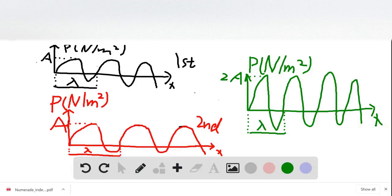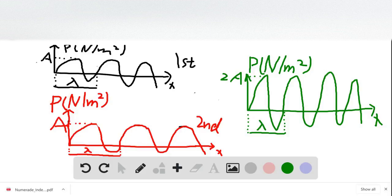For the second graph, this is the graph for the second source. The y-axis is pressure as well, and the unit is newtons per meter squared. The x-axis is the position. This is the wave graph for the second source.